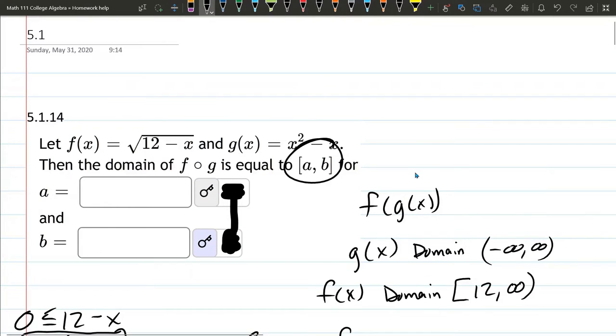This one's a little funky right here. We had negative 3 to 4, closed. And so a is negative 3, b is 4.